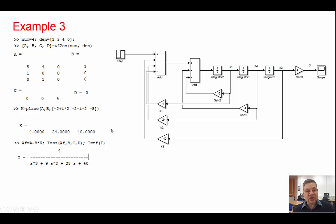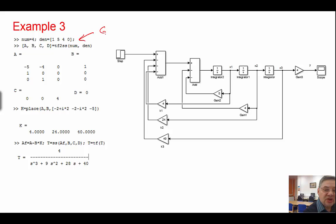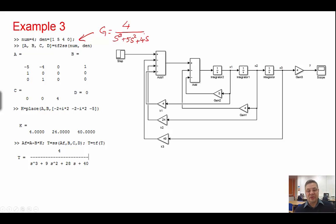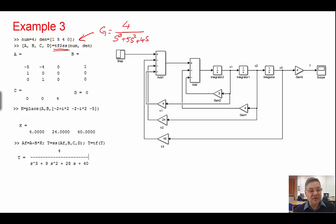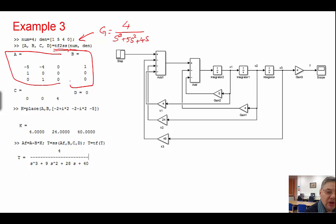Now we look at implementation using Simulink. Looking at this example, the transfer function is G equals 4 over S-cubed plus 5S-squared plus 4S with no free term. You specify the transfer function, use the command transfer function to state space, and MATLAB gives you the matrices: this is A, this is B, C, and D.